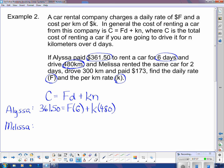Now we have to do the same thing for Melissa. This says Melissa rented the same car for, in this case, it's now two days, 300 kilometers and $173. So I'm going to stick in 173 will equal F times, well, she had it for two days and she drove 300 kilometers. So this gives us two equations.